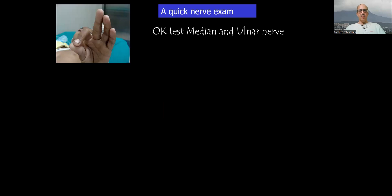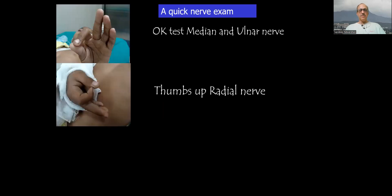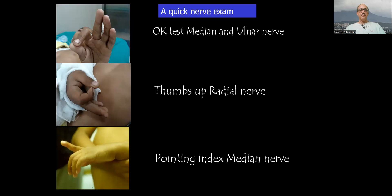Test the nerves quickly. Okay sign for median and ulnar nerve, thumbs up sign for the radial nerve, and if there is a pointing index it tells you there's an anterior interosseous nerve injury.